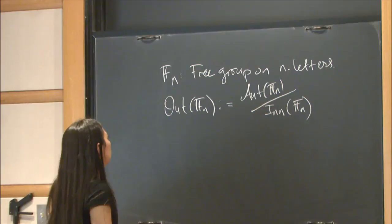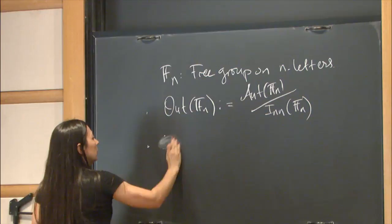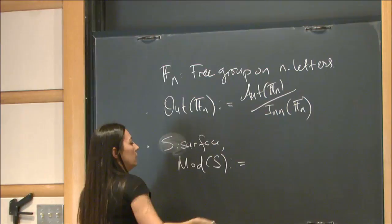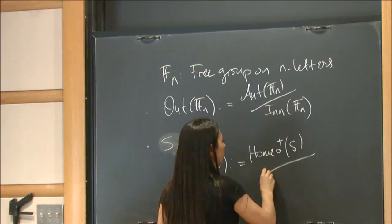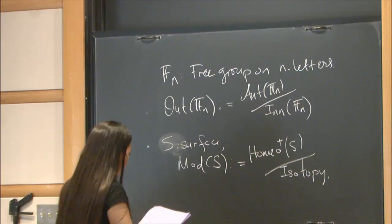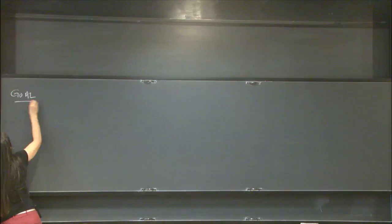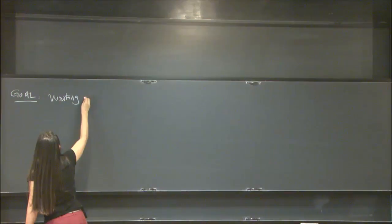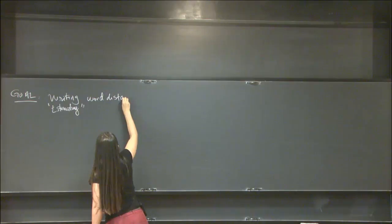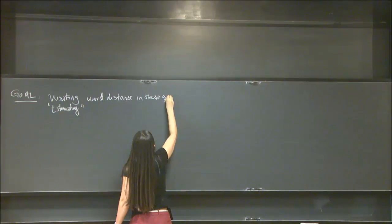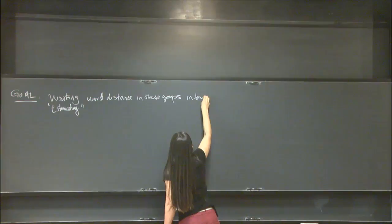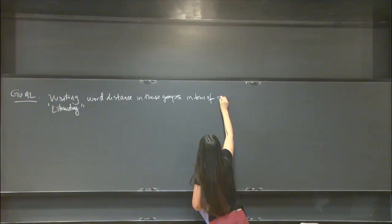The other object I'm going to have today is the mapping class group. S is going to be a surface, possibly with punctures. The mapping class group is going to be orientation-preserving self-homeomorphisms modulo isotopy. The goal is writing — estimating word distance in these groups in terms of spaces, specifically hyperbolic simplicial complexes, that they act on.